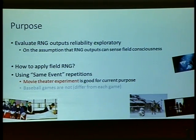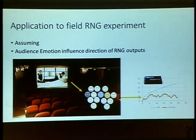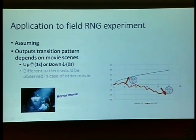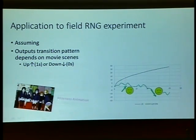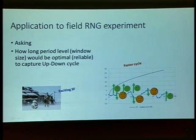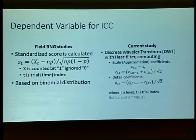A movie theater experiment is good for the current purpose. Assuming audience emotion influences the direction of RNG outputs. Output's transition pattern depends on movie scenes, and different patterns would be observed for other movies — horror movies, animation, excitingness, and so on. We also ask: how long a period level would be optimal to capture the up-down cycle? A faster cycle or a slower cycle?